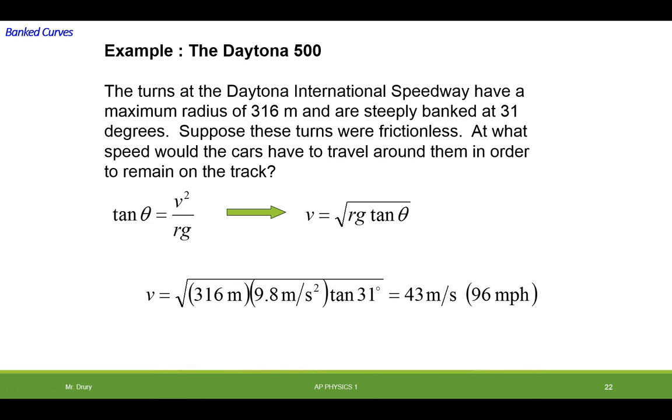Now what is this actually saying? This is saying that you can actually go 96 miles per hour around this turn and not fly off on a tangent. And that's just relying on the bank of the curve itself pushing towards the center of the circle.